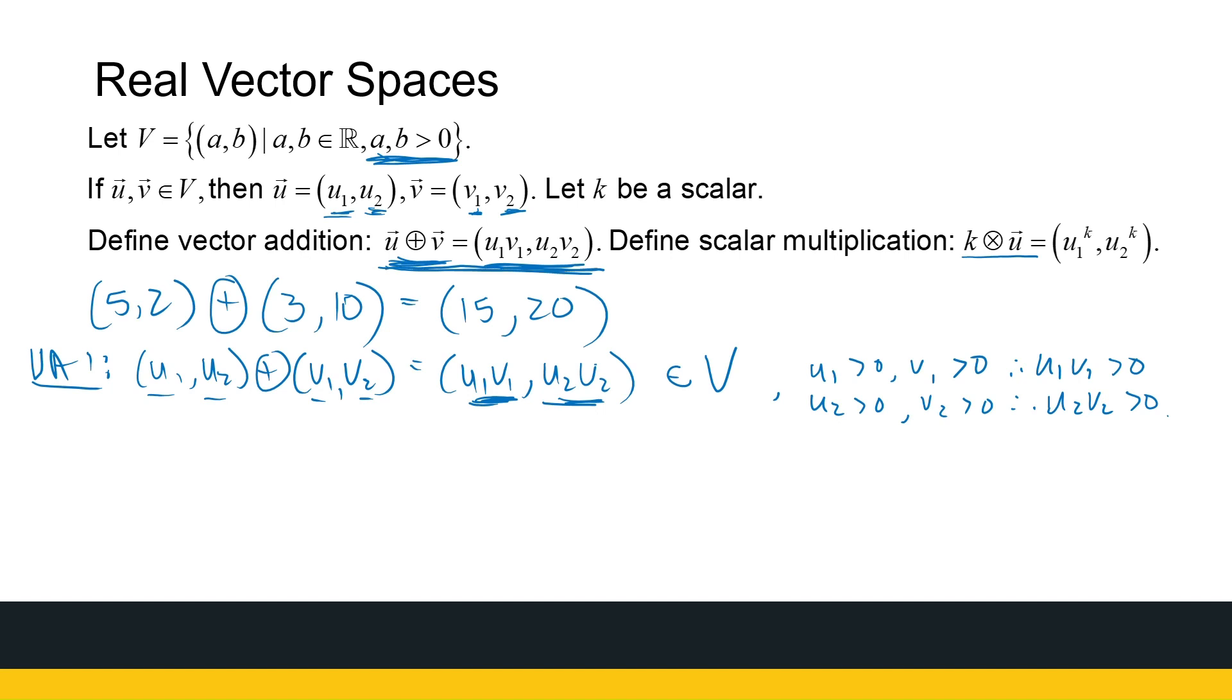It will be distributive. You can check that. We'll talk about the zero shortly. Let's just look if scalar multiplication is closed. What does scalar multiplication mean? If I take, for example, 4 times (2, 1). That scalar multiple, this definition tells me, what I do is I say 2 to the power of 4, 1 to the power of 4. That's what scalar multiplication is in this set.